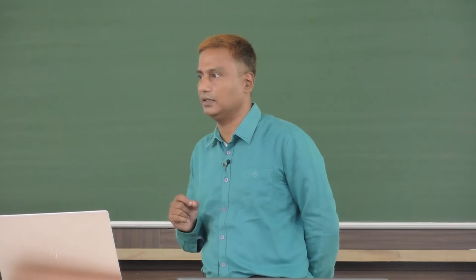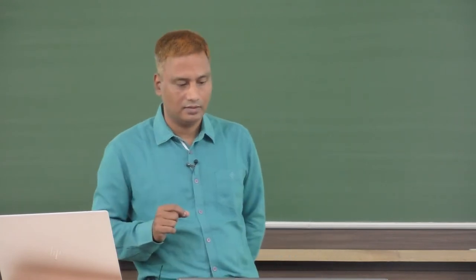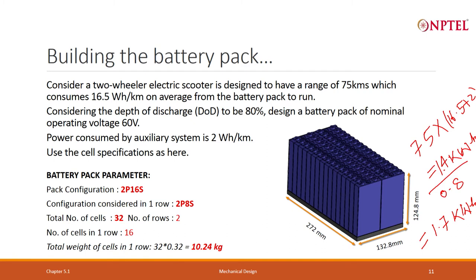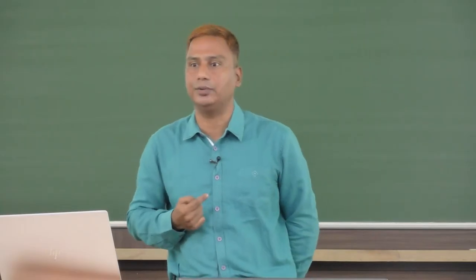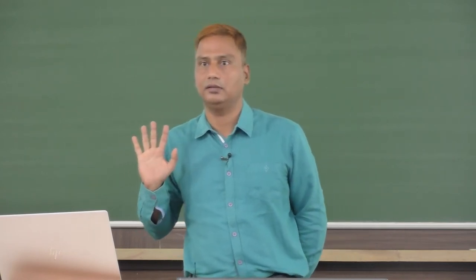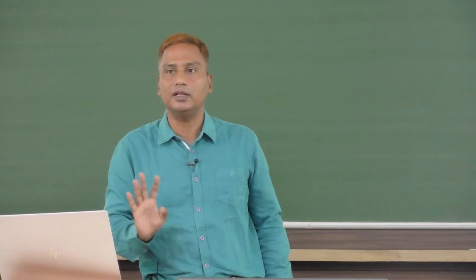My cell is 15 Ah. So either I can have 15 Ah, or 30 Ah if I put 2 cells in parallel, or 45 Ah, or 60 Ah. Since the requirement is approximately 29 Ah, this is where the engineering decision has to be taken. I can go with 30 Ah by putting 2 cells in parallel. That makes 2P configuration.